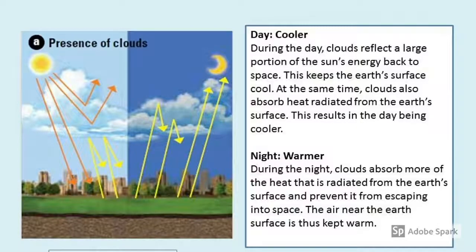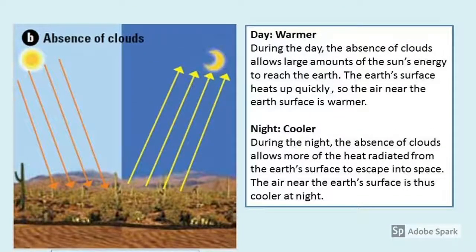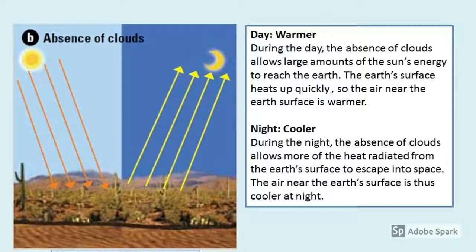For a location with clouds, the diurnal temperature range — the difference between maximum and minimum — will be smaller. In contrast, in a desert with a clear absence of clouds, a large amount of the Sun's rays heat the surface rapidly during the day, making overall temperatures very high. At night, with no clouds to rebound the heat, it is lost at a very rapid rate, making nighttime temperatures very cold.